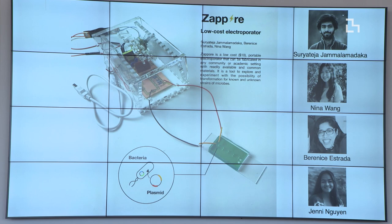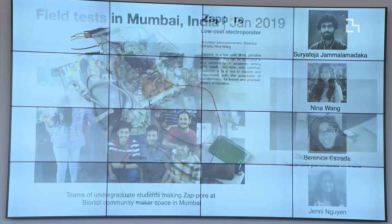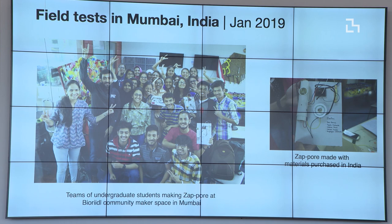One of the projects we're working on in the group right now is something called Zappor. Berenice is here in the back — Tasia is really the innovator and the visionary behind this tool. This is a $10 DNA electroporator. Electroporation is a foundational tool — a way we can get DNA into a cell. If you want to reprogram an organism, you have to get that DNA in there somehow. Tasia figured out how to hack a flyswatter and turn it into a functioning DNA electroporator.